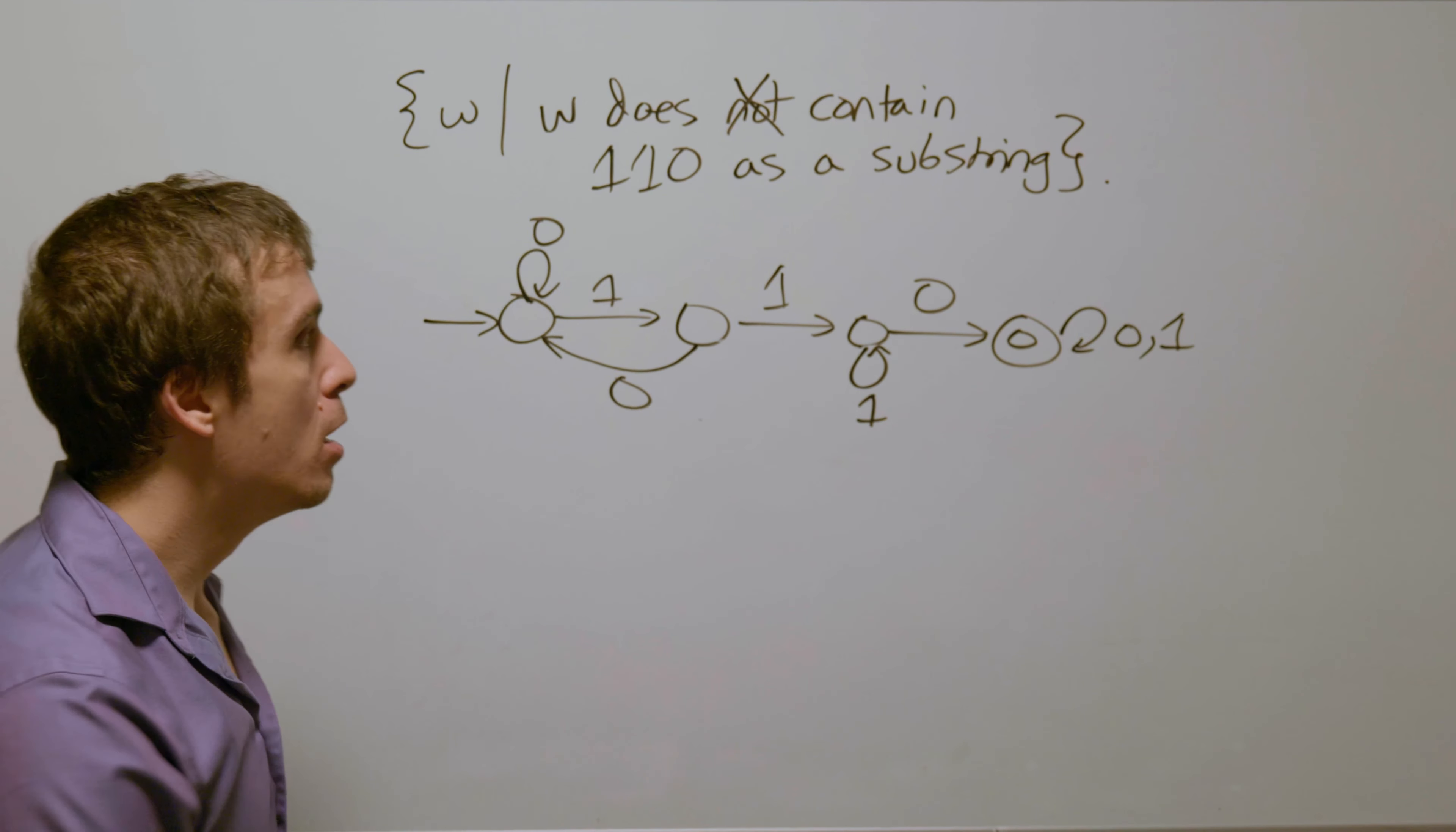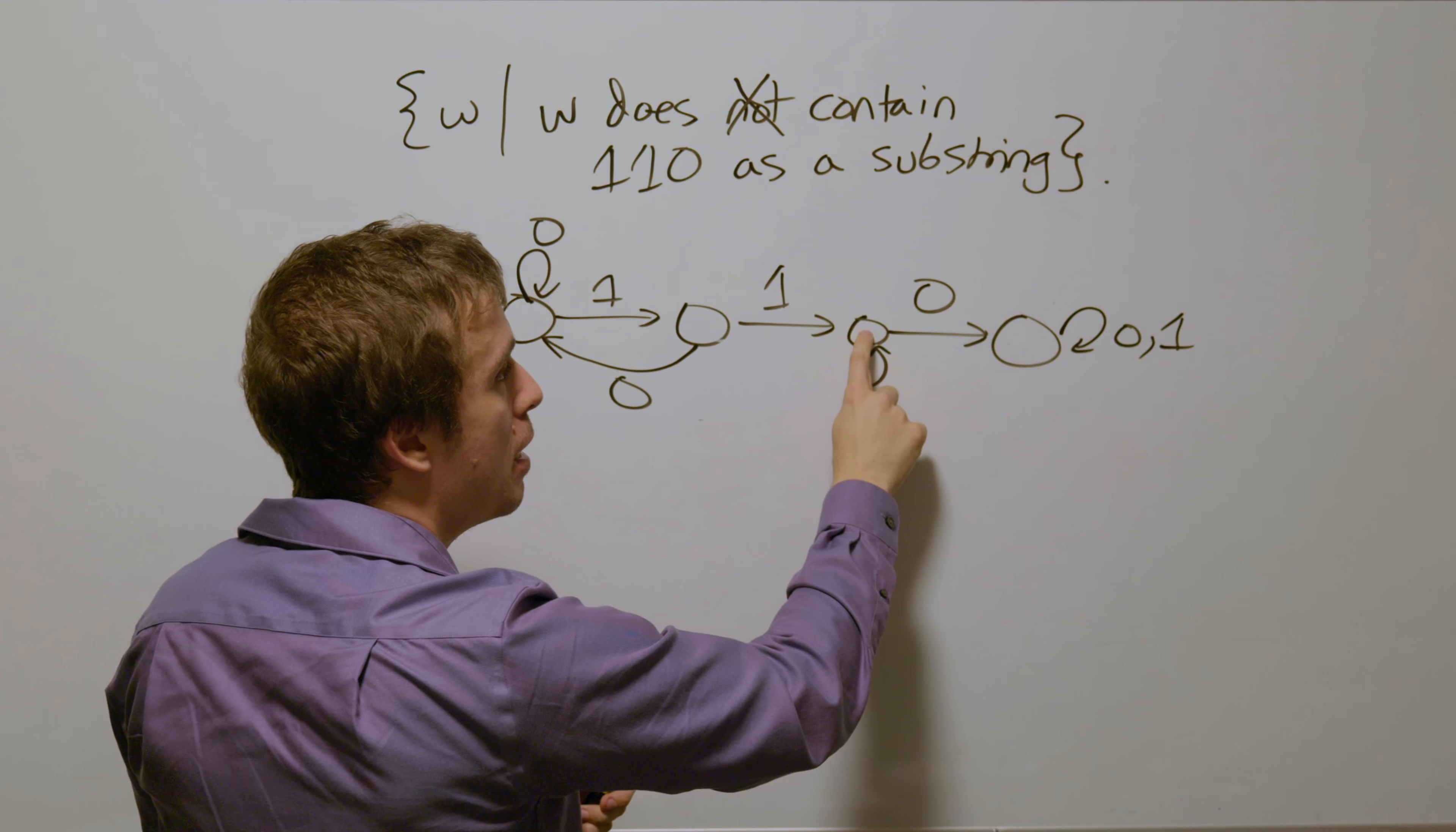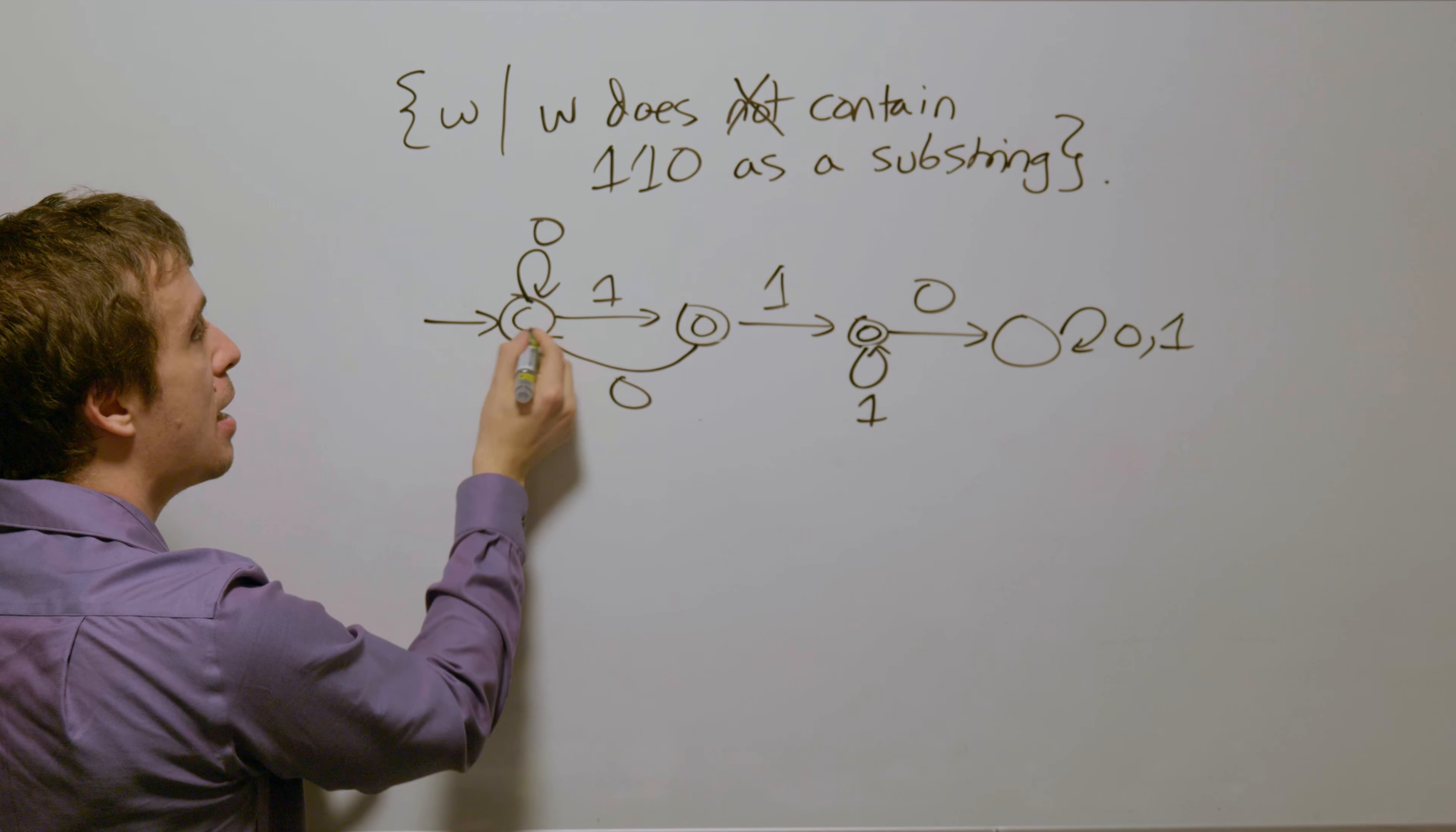Now we want the ones that are not. All that we do is just flip which states are final. So this one was final, I'm going to make it non-final. This one was not, and so therefore I'm going to make it final. This one was not, make it final. This one was not, make it final.